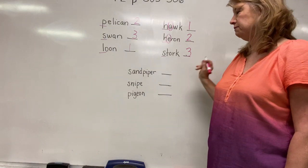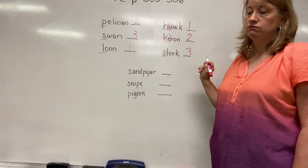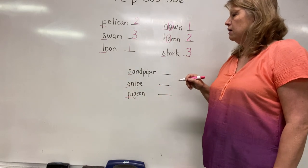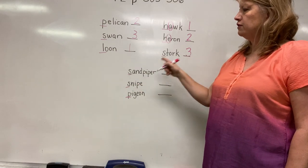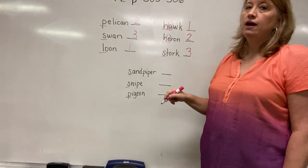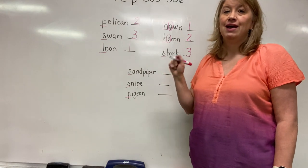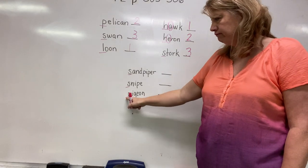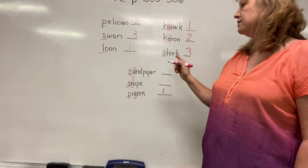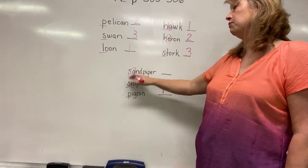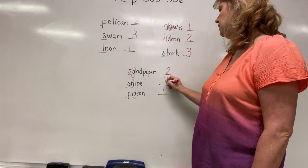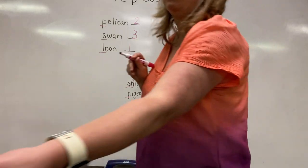Let's look at the next set: sandpiper, snipe, and pigeon. We have two words that start with S, but we have to determine whether S comes before P in the alphabet. A, B, C, D, E, F, G, H, I, J, K, L, M, N, O, P - so pigeon comes first. Now we look at the second letter of each S word: A or N? Sandpiper comes before snipe. So the order is: pigeon, sandpiper, snipe.